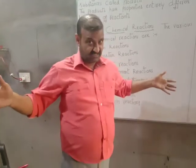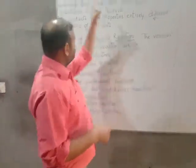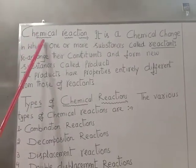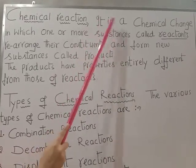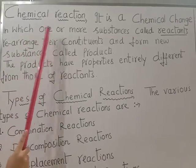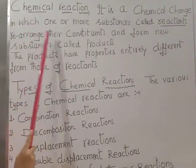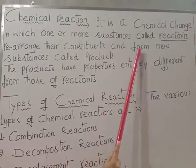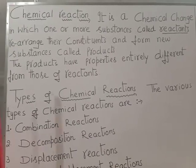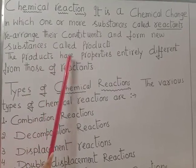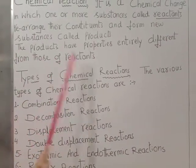First of all, what are chemical reactions? Look at the word — chemical reaction. It is a chemical change in which one or more substances called reactants rearrange their constituents and form new substances called products. The products have properties entirely different from those of the reactants.